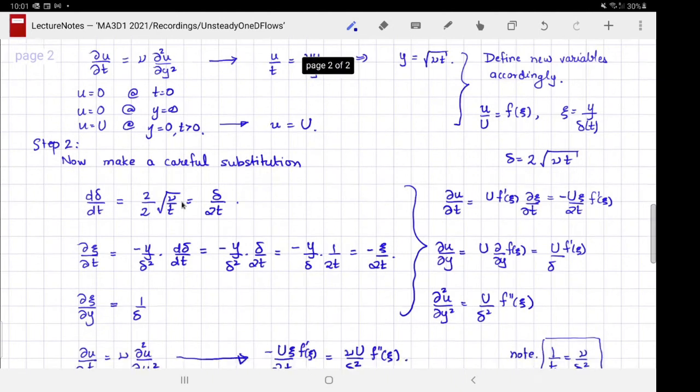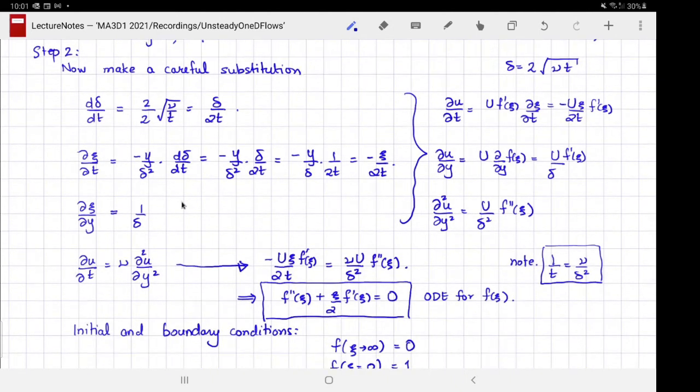Now this is step two—we become extremely careful and make this substitution into the governing partial differential equation that we derived. To facilitate this substitution and reduce the probability of mistakes, I suggest we continue in the following fashion: Let's first find the time derivative of δ and express it in terms of δ itself. If I differentiate, I get essentially δ/2t.